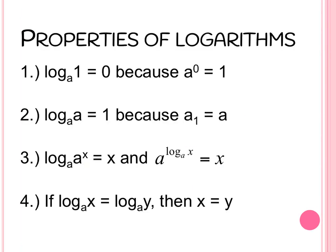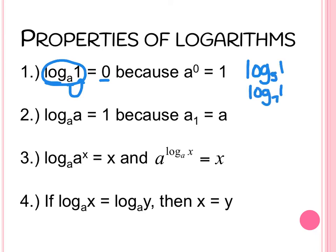Now we're going to go through some properties of logs. If you see log base A of 1, the question is what would I raise A to to get to 1 — and remember, the result of an exponential function being 1 means it was raised to a 0. So any number: log base 5 of 1 equals 0, log base 7 of 1 equals 0, because the only way to get from the base to 1 is to raise it to 0. If you see log base A of A — meaning both the base and the larger number are the same — the result is going to be 1, because what you raise A to to get to itself is 1.